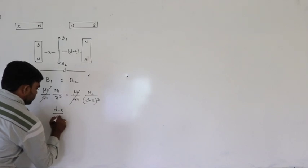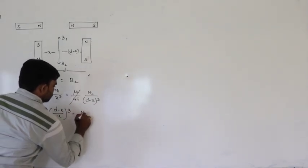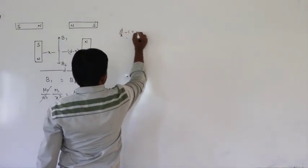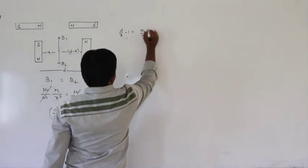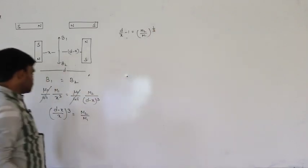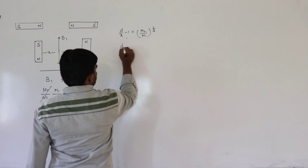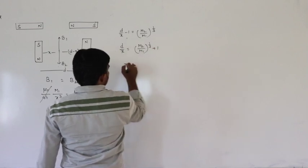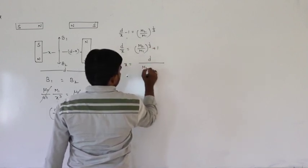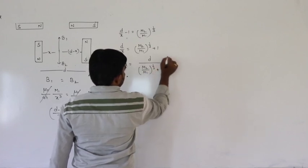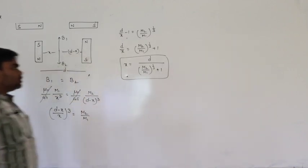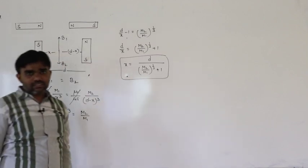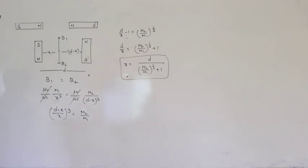From this equation, (D−X)/X = (M2/M1)^(1/3), applying cube root on both sides. So D/X − 1 = (M2/M1)^(1/3), giving D−X = X × [(M2/M1)^(1/3) + 1]. That is the position of the null point for this arrangement.